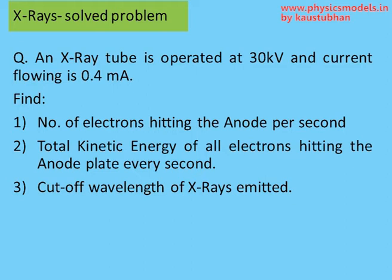We have an X-ray tube with 30,000 volts applied between the cathode and the anode. The current flowing in the circuit is 0.4 mA and we have to find out three things: how many electrons are hitting the anode every second, what's the total kinetic energy of all these electrons, and what is the cutoff wavelength of the X-rays emitted.